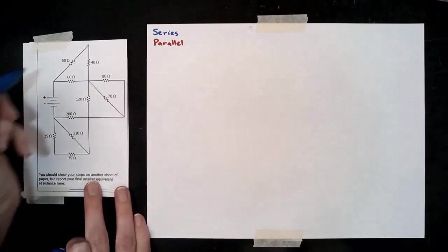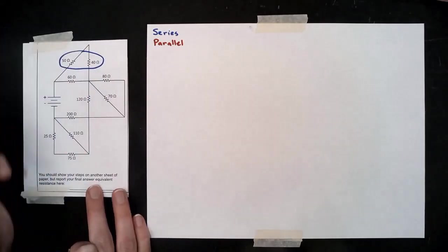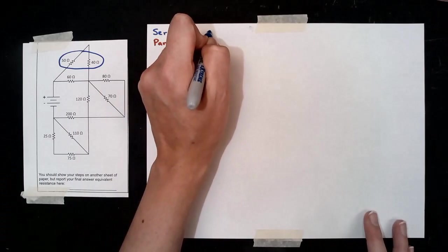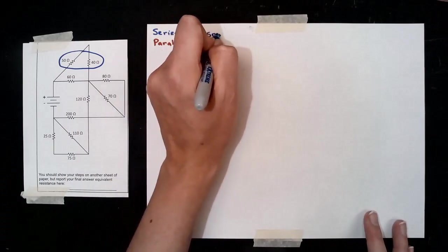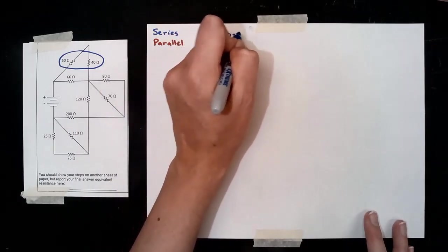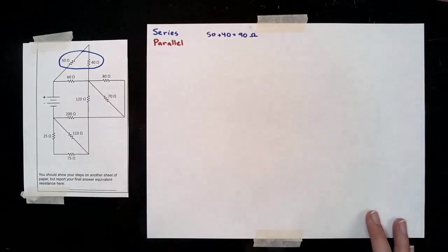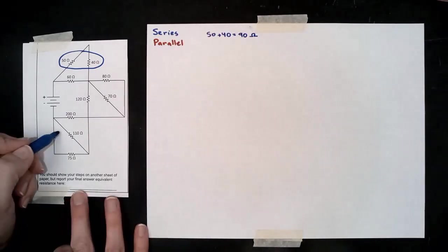Like these two at the very top, we'll calculate for series. We just add up the resistances, very straightforward. 50 plus 40 is 90 ohms. There's also a pair at the bottom, 25 ohms and 75 ohms, that we can calculate.